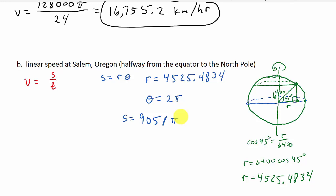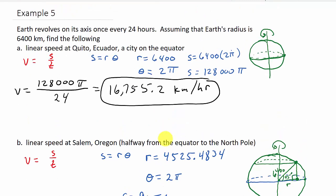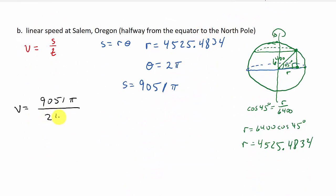Now let's just plug everything in. So I get my linear velocity as S, which is 9051 pi over T. Now remember S, that's the arc length. So how long did it take it to travel S? Well, remember up here, it took it 24 hours. And so T is 24. And so I get my linear velocity is 9051 times pi and then divide that by 24. And I get 1184.8. And that would be kilometers per hour.